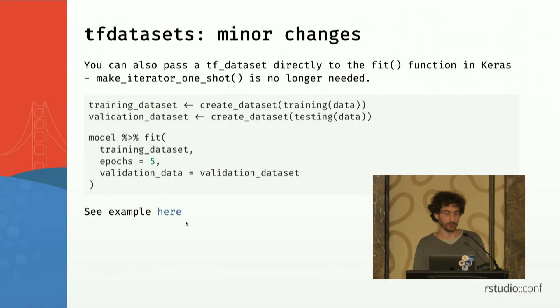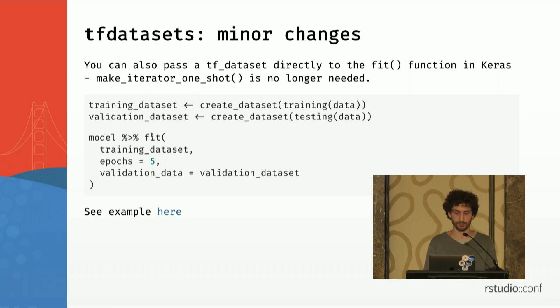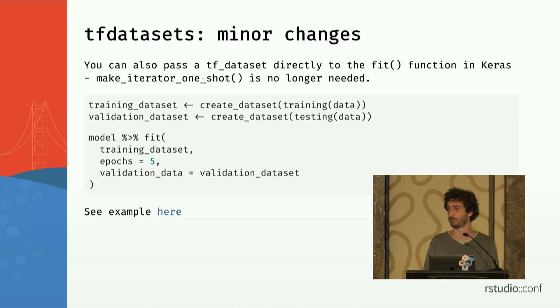There are also some minor changes in tf.datasets. If you ever used dataset_map, you needed to write a function for each map, but now you can use purrr-style lambda functions, which simplifies the code a bit. Also, if you used tf.datasets before, you needed to use the make_iterator_one_shot function to create an iterator for your TensorFlow dataset. Now you can pass this directly to Keras and it will just work.